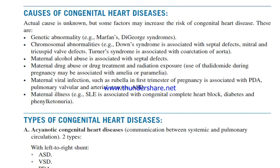Maternal viral infections such as rubella in the first trimester of pregnancy are associated with patent ductus arteriosus, pulmonary valvular and arterial stenosis. Maternal illness — for example, SLE is associated with congenital complete heart block, diabetes, and phenylketonuria.